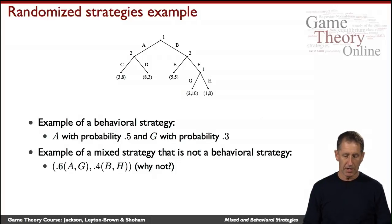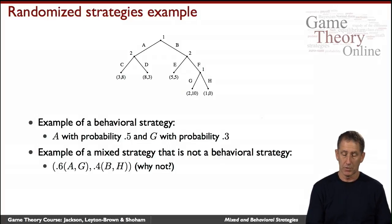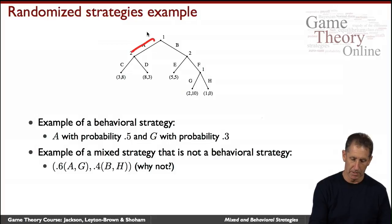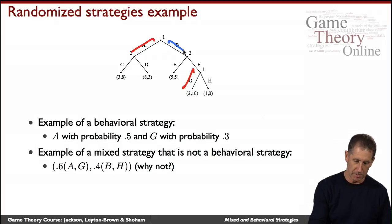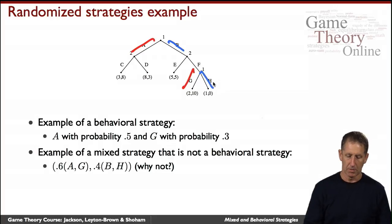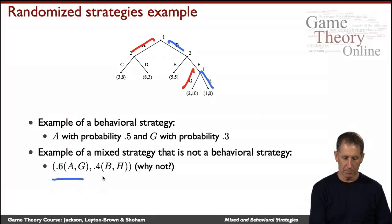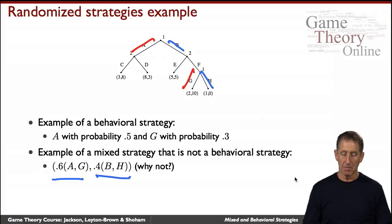Similarly, a mixed strategy here would be something like the following. Let's look at two pure strategies: for example, A-G would be one pure strategy, and B-H would be another pure strategy. A mixed strategy is then a convex combination — some mixture of the two — say 0.6 of one and 0.4 of the other.